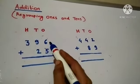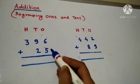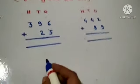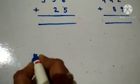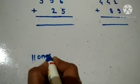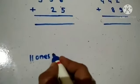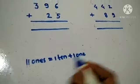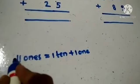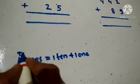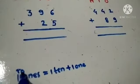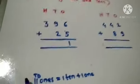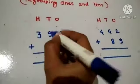always start writing the 2-digit number from the 1's place. Now let's add the 1's first: 6 plus 5 is equal to 11 — that's 11 1's. 11 1's means 1 ten plus 1 one. Write 1 in the 1's column and carry forward 1 ten to the 10's column.